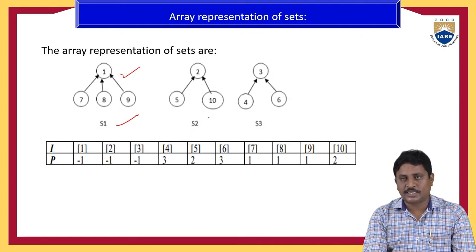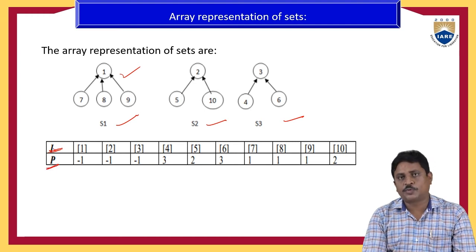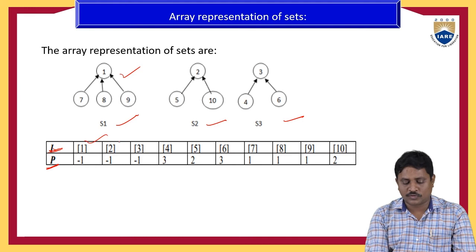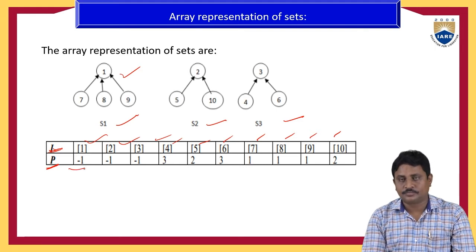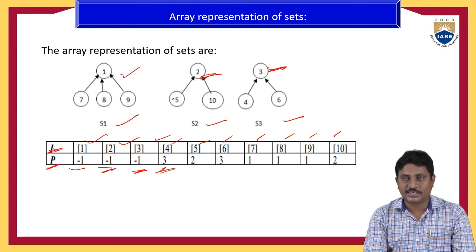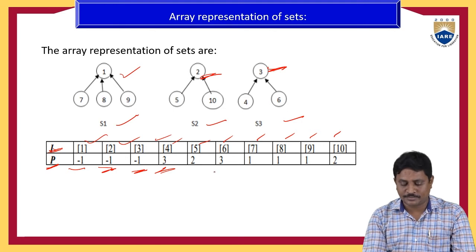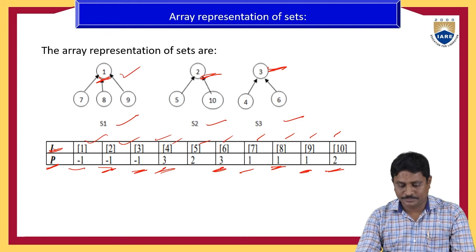This is the array representation of these sets. The nodes are one through ten and P means pointers. One is a parent node so we represent it with minus one; similarly two is a parent node with minus one; three is a parent node with minus one. Four is a child of three so we write three as its parent; five is a child of two so we write two; six is a child of three so we write three; seven, eight, nine have parent one; ten has parent two.